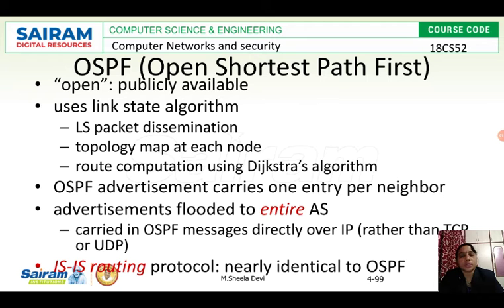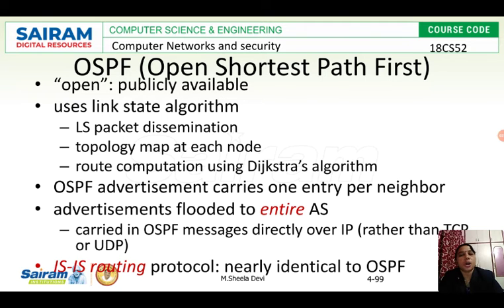Dijkstra's algorithm finds the shortest path as discussed in previous videos. It is going to use LS packets — that is link state packet dissemination. Then every node will have its own topology map, and routes are computed using Dijkstra's algorithm. First it has to disseminate the link state packets, and every node will know how it is connected to other nodes in that particular network.